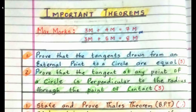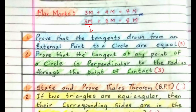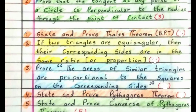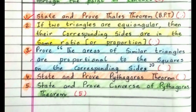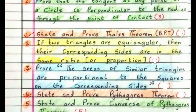Students, this year the theorem will be for 3 marks plus for 5 marks. For 3 marks, the definite theorem is: prove that the tangent drawn from an external point to a circle are equal. For 5 marks, you can expect state and prove Thales theorem, then the areas of similar triangles, or state and prove Pythagoras theorem. Out of these 3, you can expect 1 theorem for 5 marks. Check these once before going to exam, otherwise try to learn them.